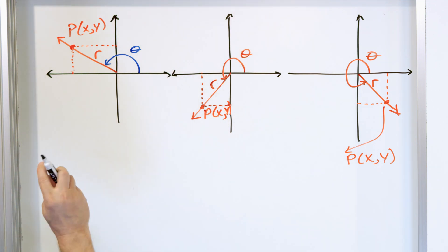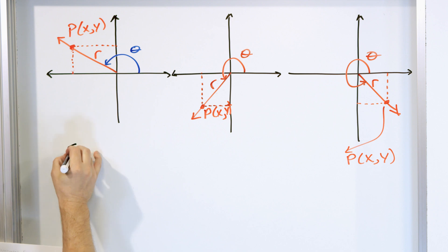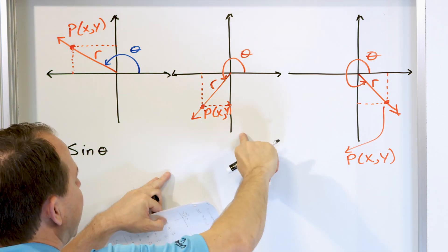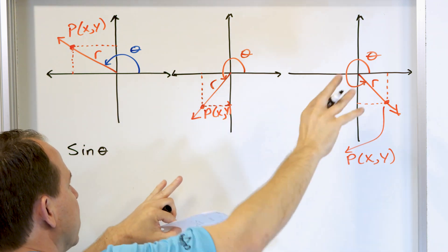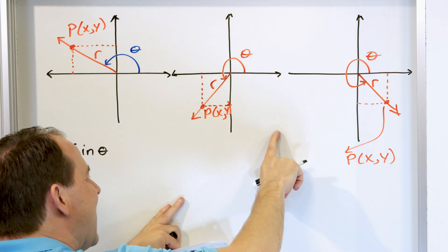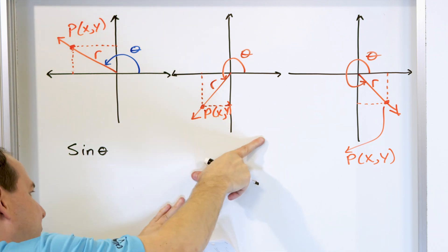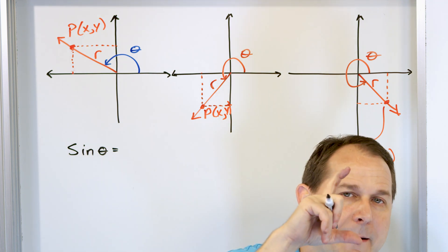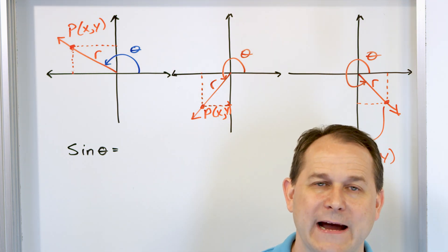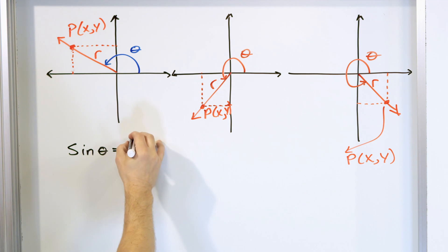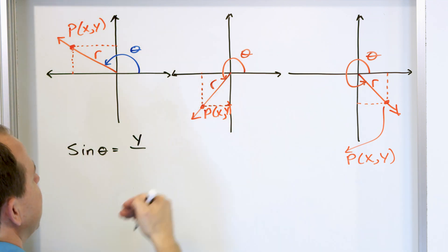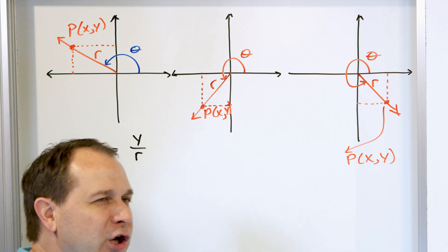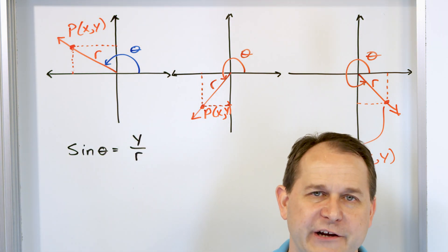Going back down memory lane, we defined the sine of some angle. In quadrant one with a triangle, we had opposite, adjacent, and the hypotenuse. We said that the sine of an angle is the opposite over the hypotenuse. We called that opposite side Y — the vertical side of the triangle — over the hypotenuse, which we called R. The definition of sine we learned a long time ago for a triangle is the same definition here.